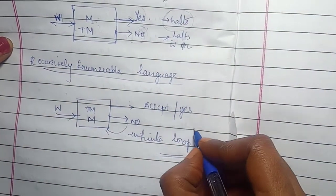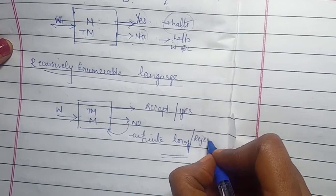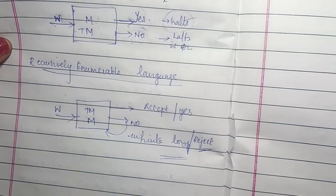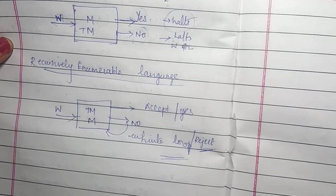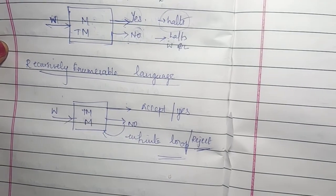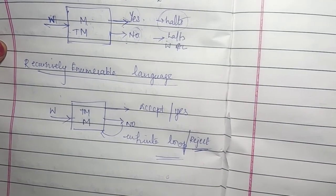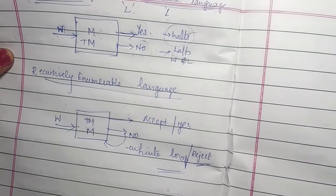So this is known as recursively enumerable language, where rejection leads to an infinite loop.